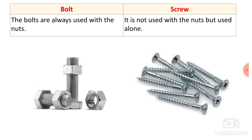The third difference: bolts are always used with a nut — a nut is always used with the bolt for assembly purposes. Screws, on the other hand, are not used with a nut but are used alone.